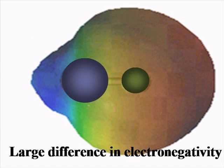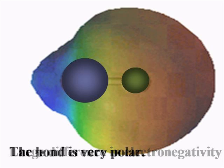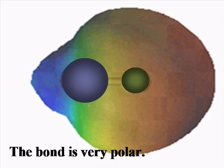In this bonding, there's a large difference in electronegativity between the two atoms. Again, the smaller one will pull the electrons more towards it — it is more electronegative. And this creates a bond that is very polar.